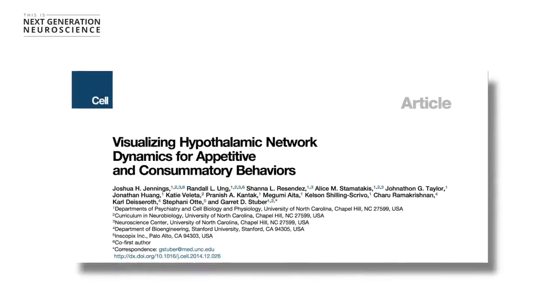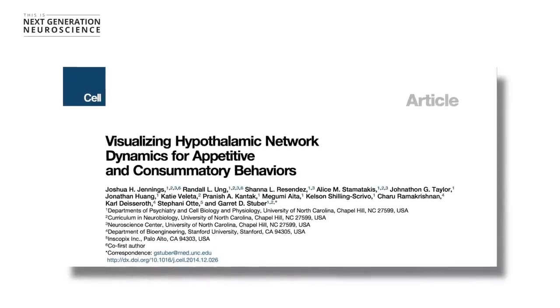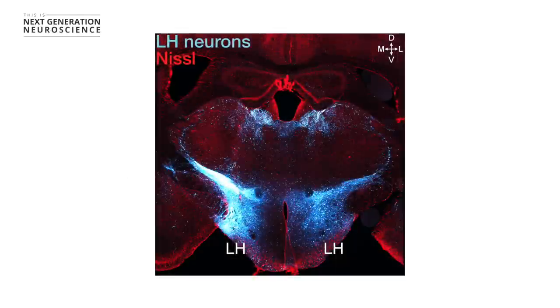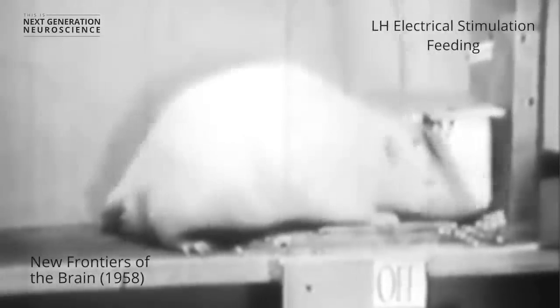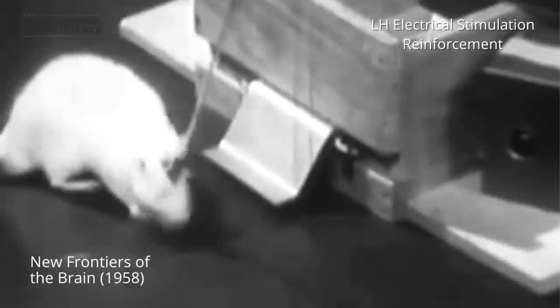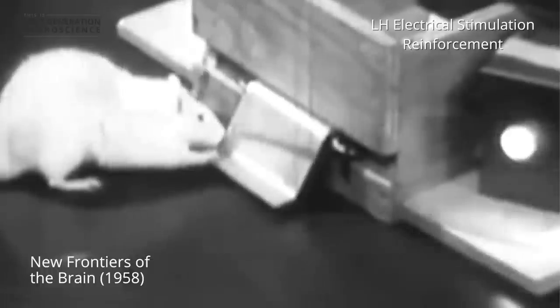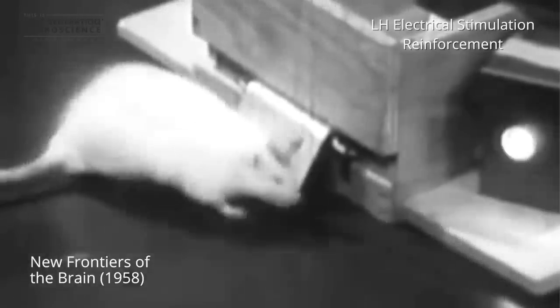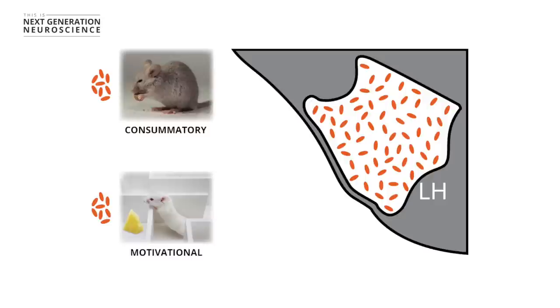One of the interesting things that led us to studying the lateral hypothalamus in the context of feeding behavior was some observations that were made over 50 years ago. When this area of the brain is electrically activated, it produces very voracious feeding behavior as well as reinforcement behavior. The animals will work incredibly hard to receive electrical stimulation of this region of the brain. But at the cellular level, in terms of what cell types and circuits are orchestrating this, really hasn't been worked out. And so that was something that we wanted to focus on in our work.